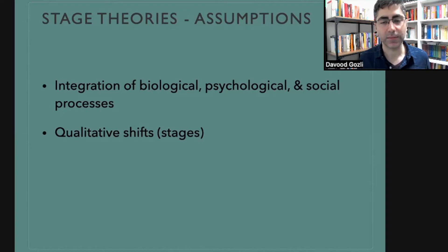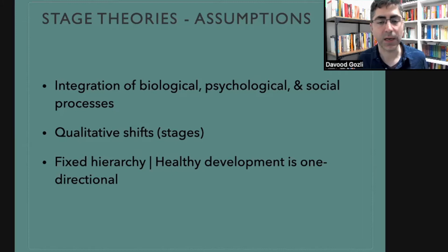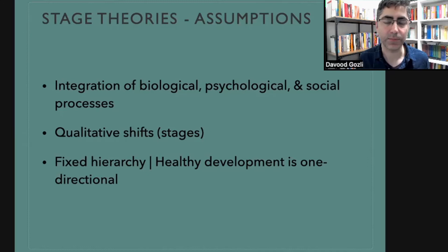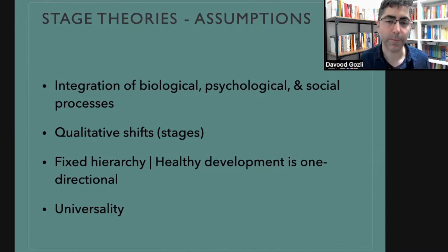They also assume that the shift from one stage to another represents a qualitative shift. Another assumption is that there is a fixed hierarchy, and healthy development is a one-directional movement through this hierarchy. Going back to a previous stage is regression — it doesn't represent healthy development. You can't jump from stage one to stage four; you must go through them in order. They also assume a universality that cuts across cultures, meaning these observations hold even if you change the cultural context.